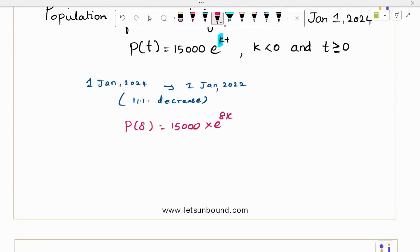Again, the k is a problem. So is there any other way to use this, that is decrease in population? Yes. Initial population, then after 8 years, what will be the 11% decrease and we can equate it.